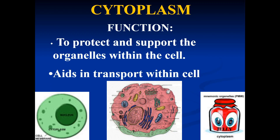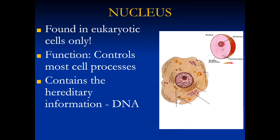The cytoplasm's function is to protect and support the organelles inside the cell, and it aids in transportation within the cell. The nucleus, found in eukaryotic cells only, controls most of the cell processes.